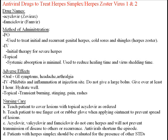IV therapy is the initial therapy for severe herpes. Topical therapy has minimal systemic absorption — topical application will reduce healing time and virus shedding time, but is less effective overall than oral administration. Adverse effects include, for oral drugs: GI symptoms, headache, and arthralgia. For IV administration: phlebitis and inflammation at the injection site — do not give a large bolus; give over at least one hour and hydrate well. For topical administration, transient burning, stinging, pain, and rashes are common adverse effects.